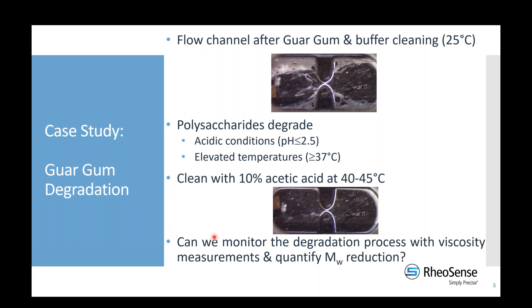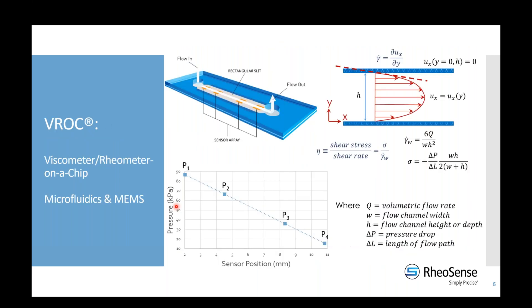The question we asked was: can we monitor the degradation of guar gum at elevated temperatures under acidic conditions, and then use the viscosity measurements to extract a molecular weight? We wanted to see how molecular weight might be dropping as a function of time. That's the backstory for why we started looking at this particular type of measurement.